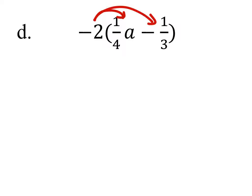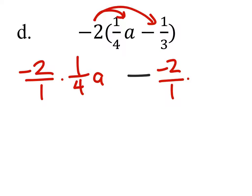So the operation will be the same here as a minus. And we got a negative 2. We can say it's a negative 2 over 1. We just need to show that phantom one. And that would be multiplied by 1 fourth A. And then we also have a negative 2 over 1 times 1 third as the second part of the distribution.